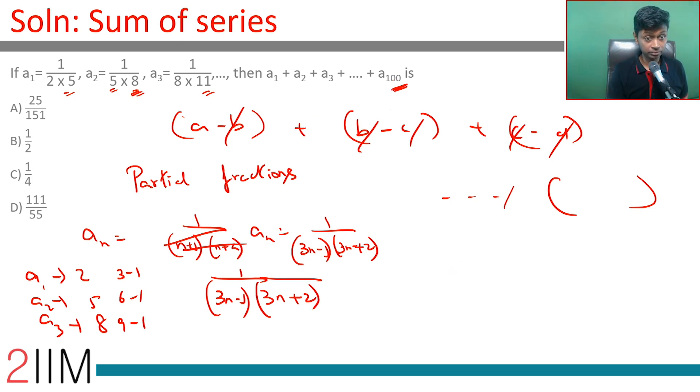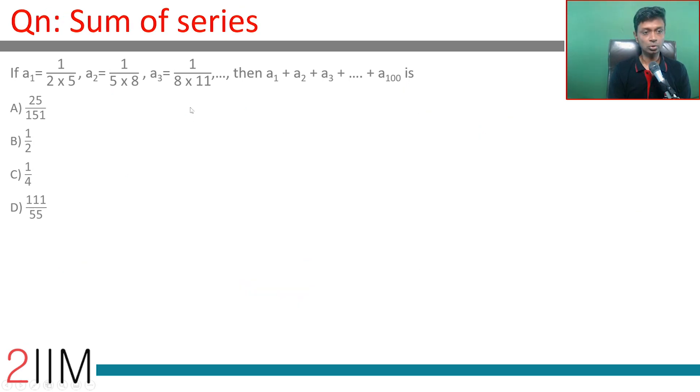The 100th term will be 1 by 3 into 100 minus 1, so 300 minus 1, 299 into 302. That is the 100th term. We are going to break this open using the idea of partial fractions.